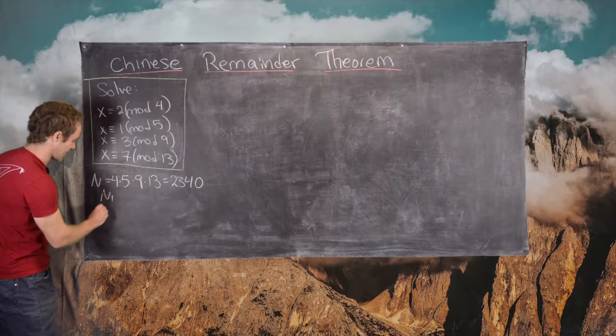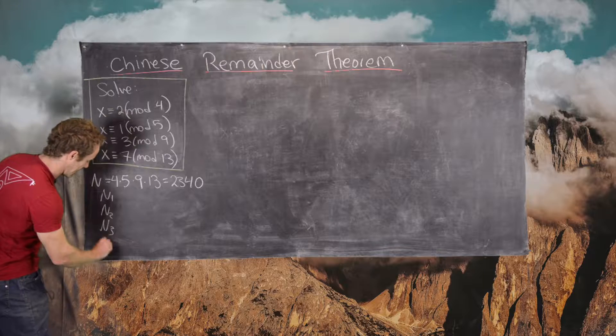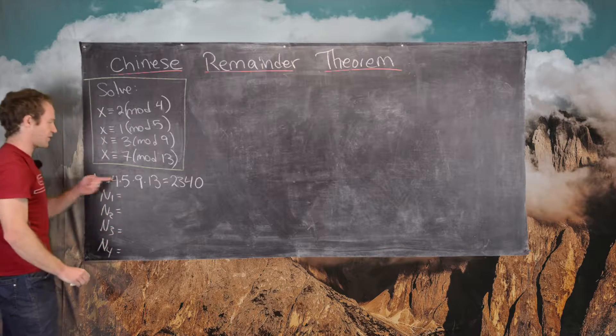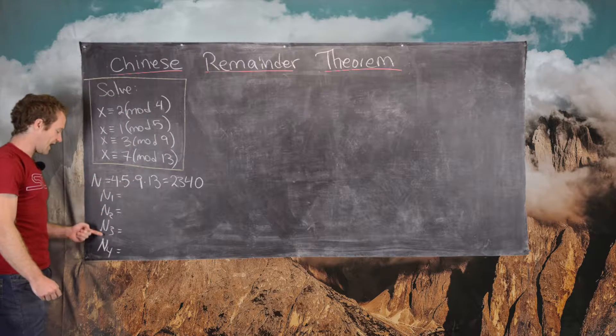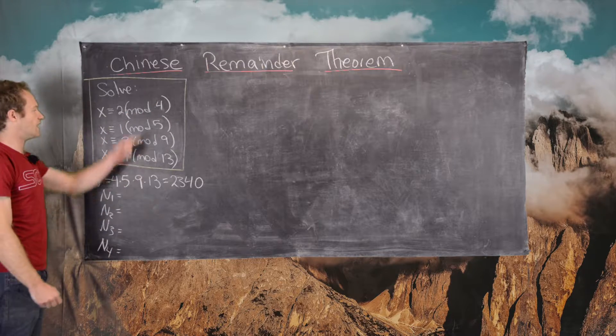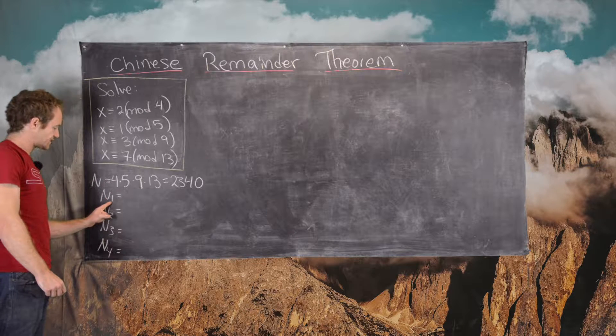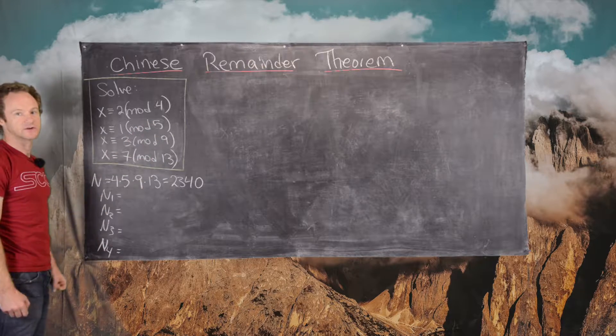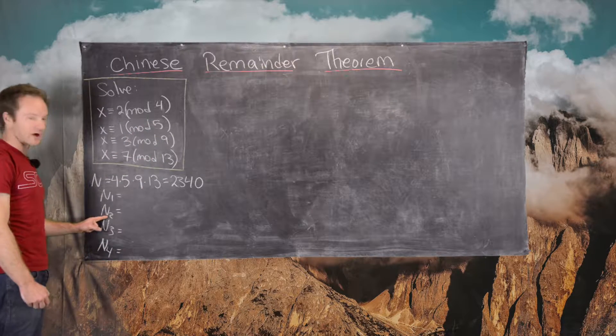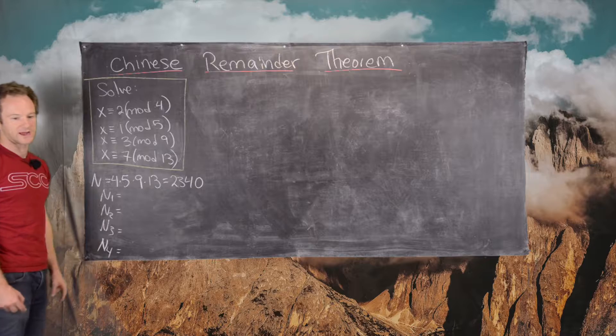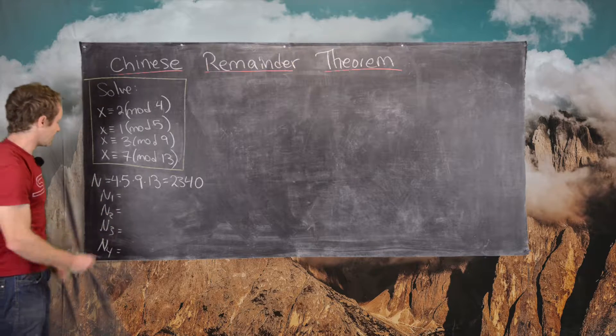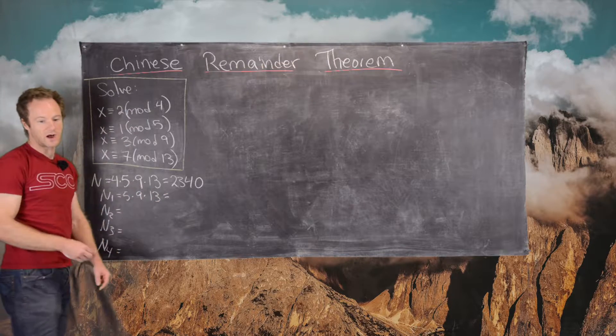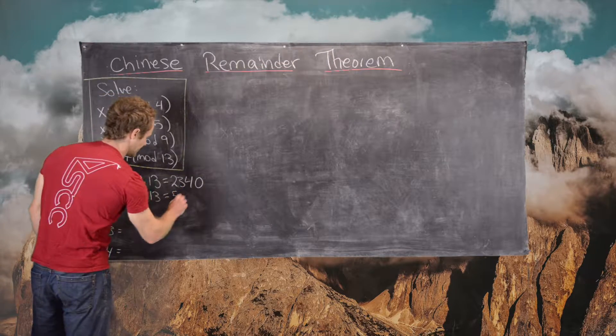The next thing we want to do is calculate N1, N2, N3, and N4. If capital N is the product of all four of these, the NI are the product of three of the four, where we leave off the one indicated by the subscript. In this case, N1 equals 5 times 9 times 13, which is 585. N2 equals 4 times 9 times 13, which is 468.